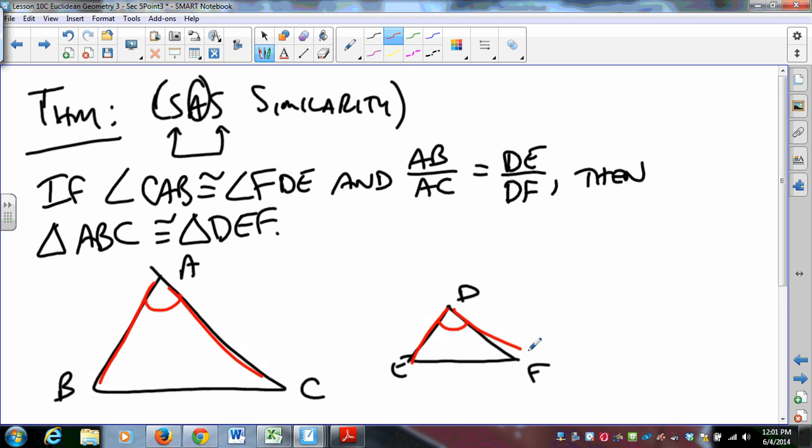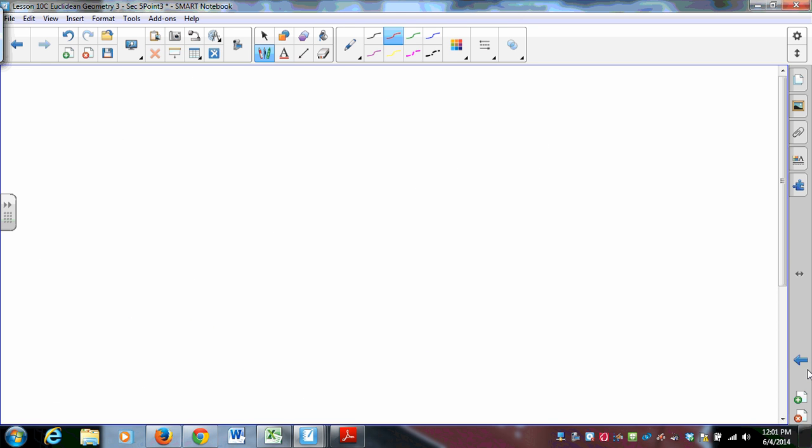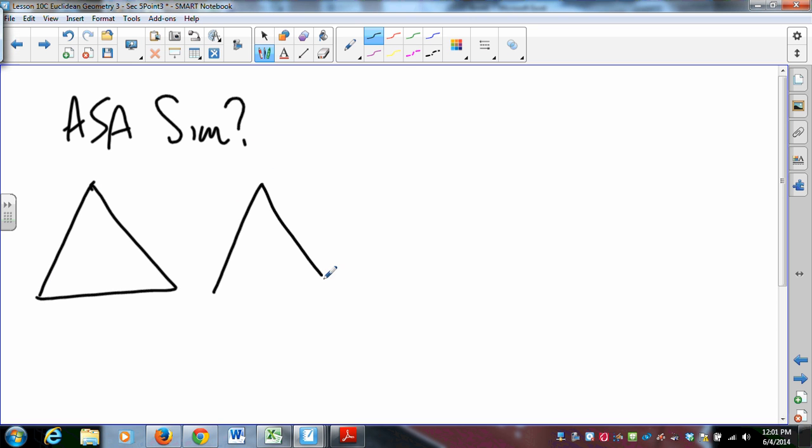I argue that that means that all three angles of the one must be congruent to their corresponding angles in the other. This is side-angle-side similarity. So there are questions to consider, things like: does angle-side-angle similarity work? If I have two triangles and those angles match and those angles match and these are in proportion, is that enough?